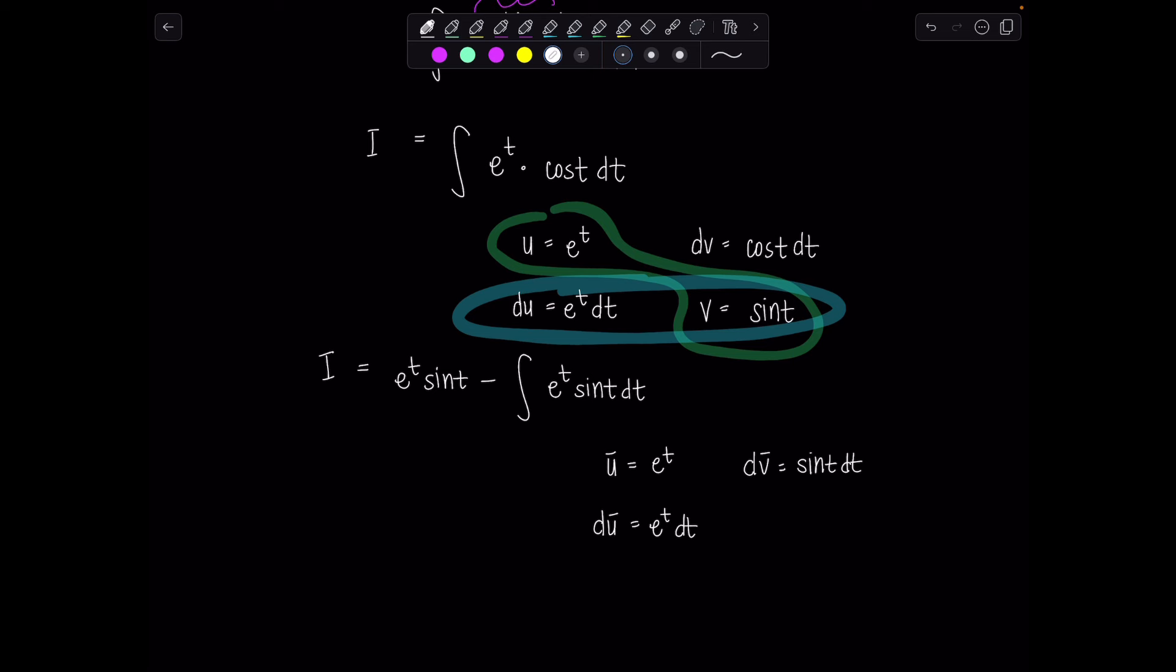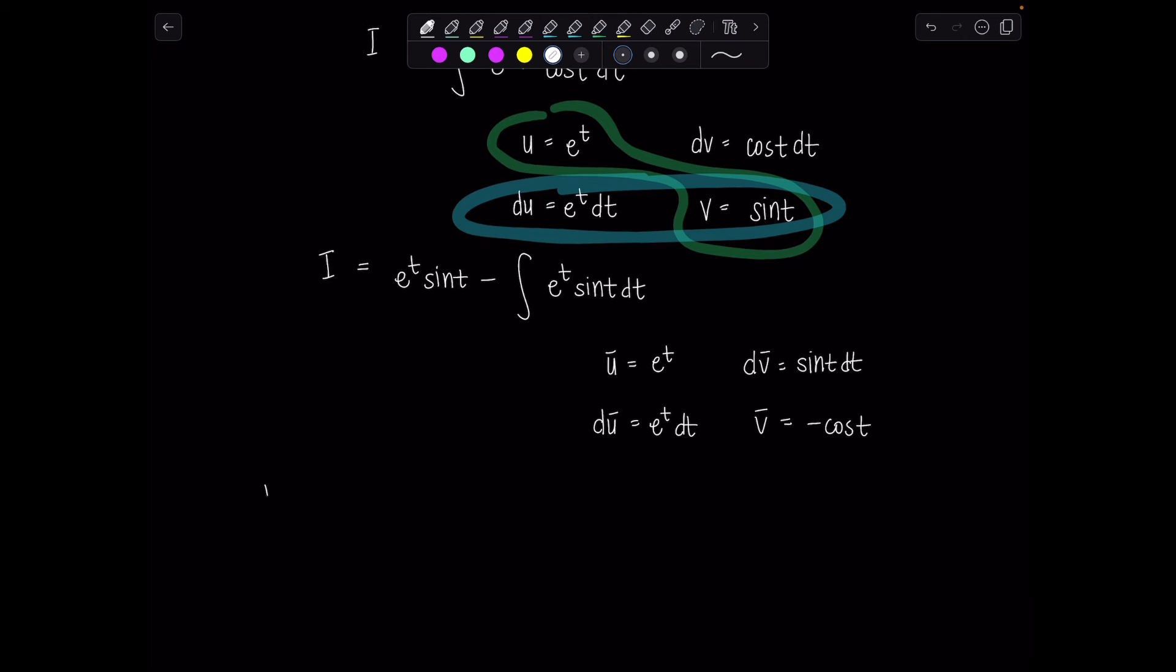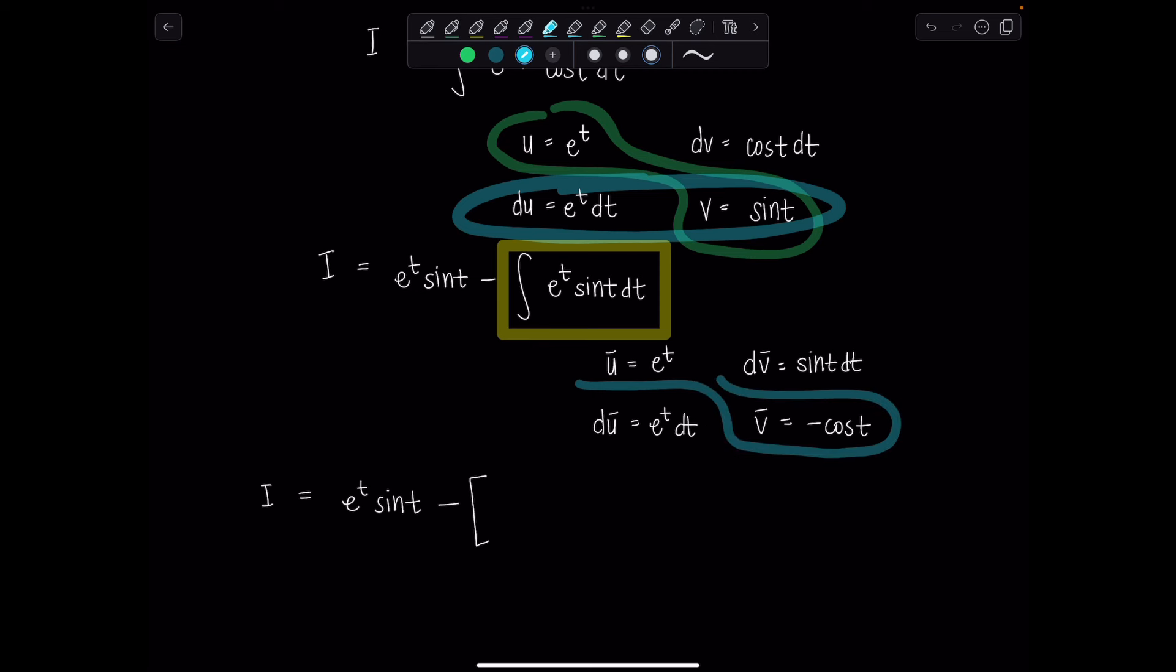It takes one more round. And notice in the first round, since I let u be the exponential function, I need to let u bar be the exponential function again. And then dv bar is going to be sine t dt. And then du bar e to the t dt. v bar would be negative cosine t, antiderivative of positive sine t.